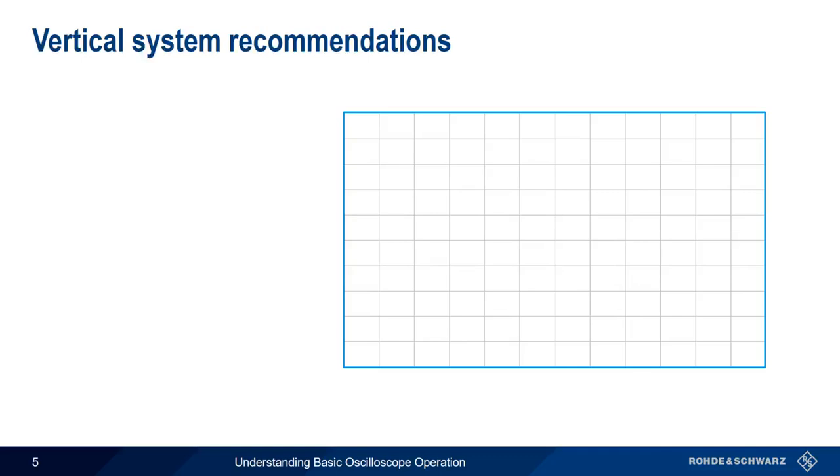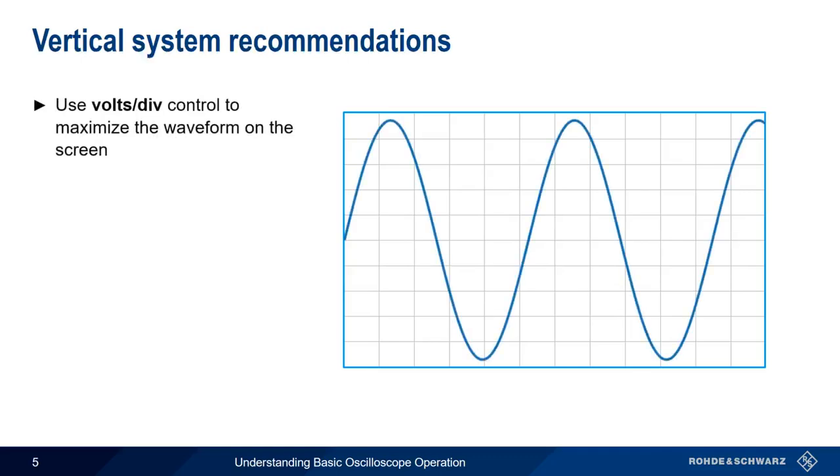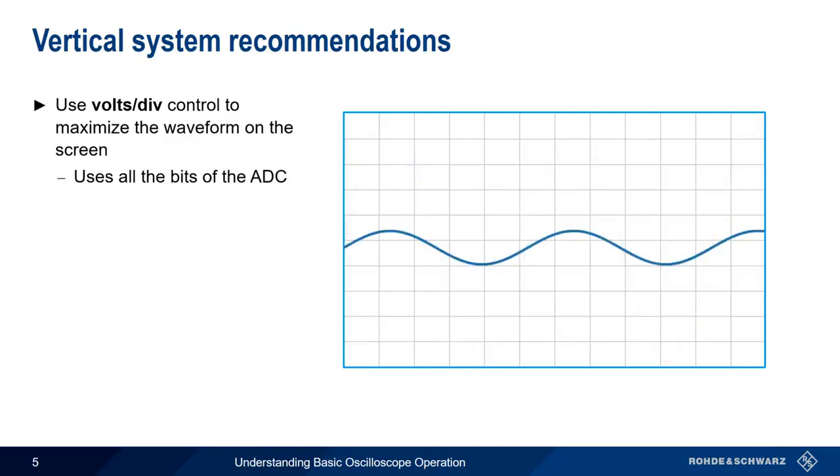The most important thing to keep in mind when configuring the vertical system is to use volts per division to maximize the waveform on the screen. In other words, to have the positive and negative peaks as close to the top and bottom as possible without clipping the waveform. By doing this, we ensure that we're using all of the bits of the scope's analog to digital converter. If we don't use the entire vertical scale, then we're not taking full advantage of the scope's ADC. It's also easier to see small details or features in the waveform when we maximize our use of the vertical scale.